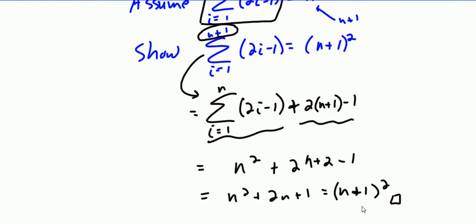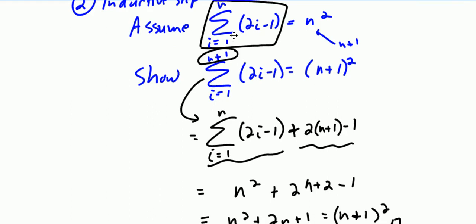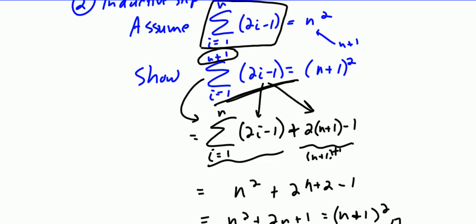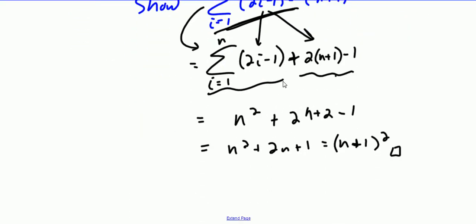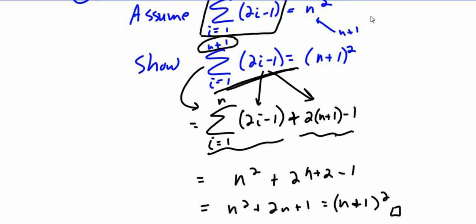Most of these induction proofs will go basically the same way. You're going to have a rule for the sum as i goes from 1 to n, and you try to show it works for i goes from 1 to n plus 1. You can always do that by splitting the sum of the first n plus 1 terms into the first n terms plus the n plus first term. The key idea is that this sum gets split — instead of going all the way to n plus 1, you take the first n and then the n plus first term. With some practice you should be able to get the hang of this — try some homework problems.